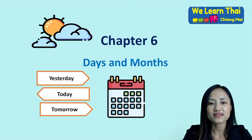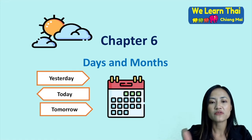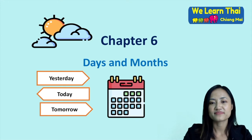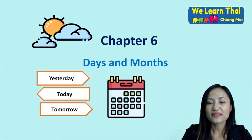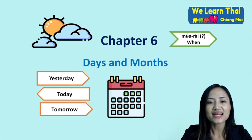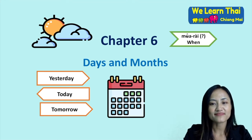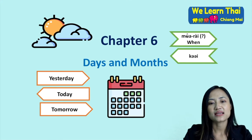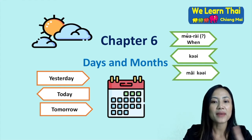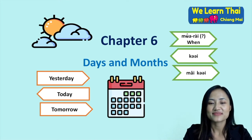In Thai language, we don't have tenses that indicate things that happened in the past, in the present, or in the future. So we will use time words in sentences that we have learned from chapter 1 to chapter 5. We will also learn the question word for 'when,' and the words for whether you have or haven't experienced something. Enjoy!